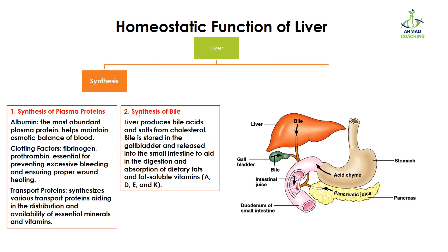The second synthesis function of the liver is synthesis of bile. The liver produces bile acids and salts from cholesterol. Bile is stored in the gall bladder and then released into the small intestine to aid in the digestion and absorption of dietary fat and fat-soluble vitamins. The function of bile is emulsification of fats — it is released into the small intestine where it acts on the fat, emulsifying it or converting it into small droplets so that enzymes can act on it and digest the fat.